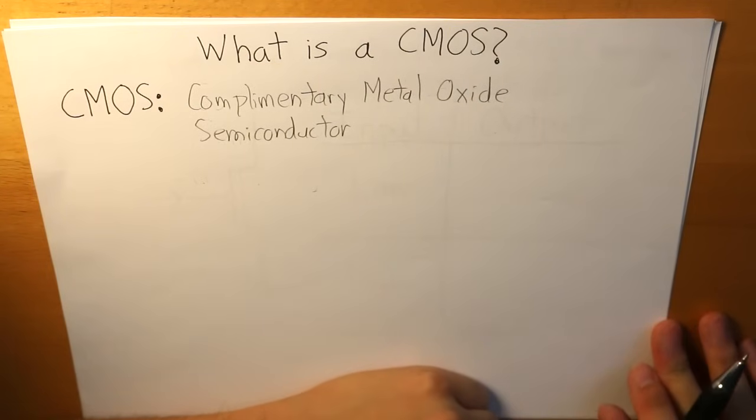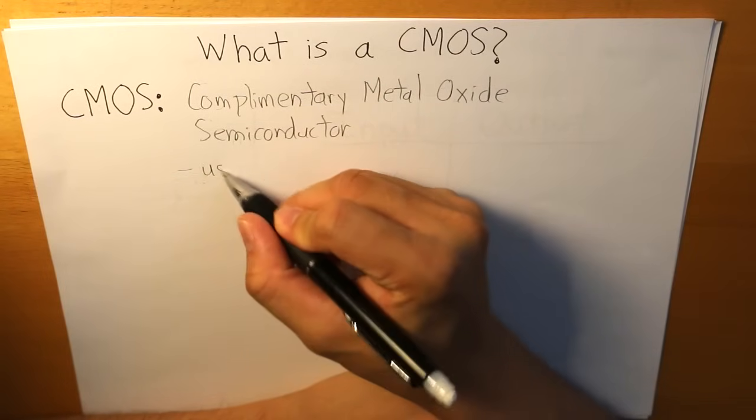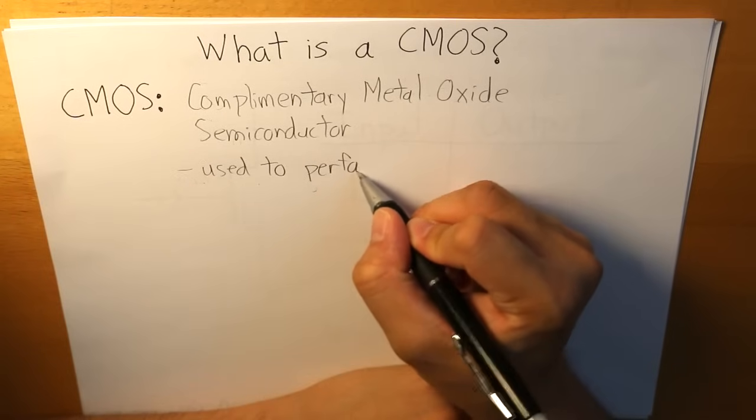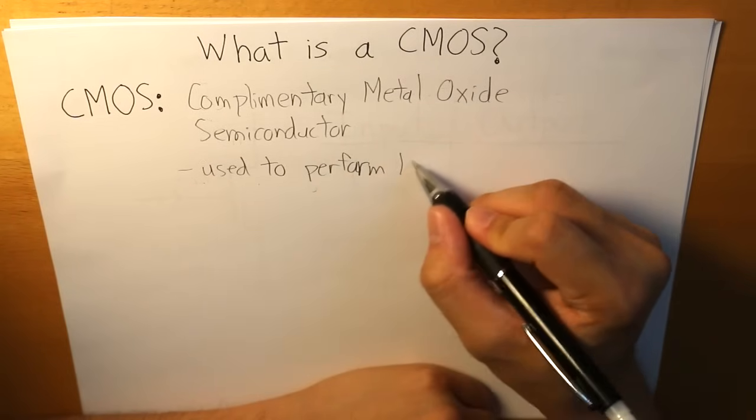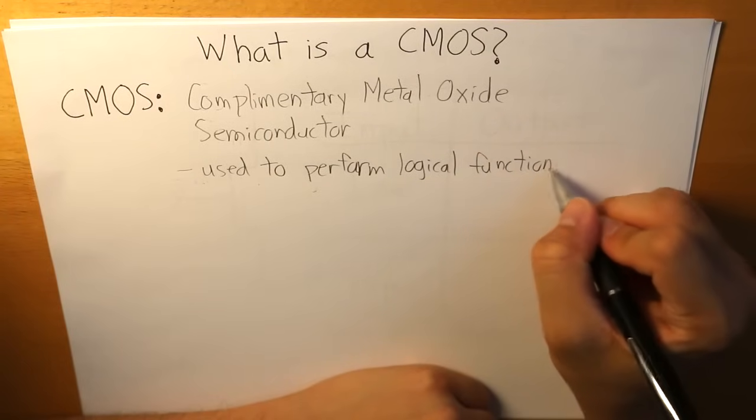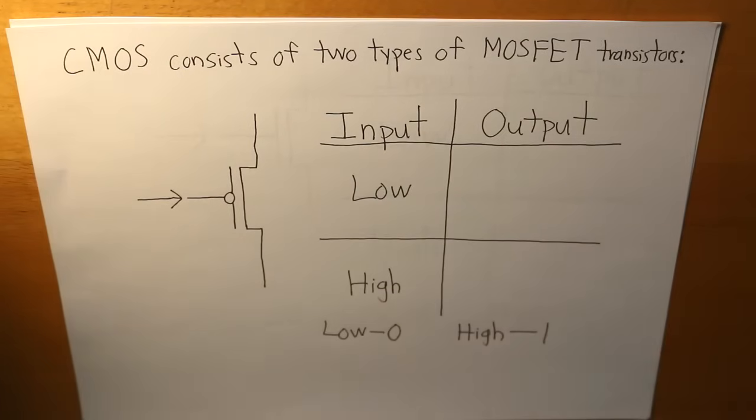It's like a logical transistor that is used to perform logical functions. The CMOS is essentially divided into two main parts, and these two main parts are simply two types of MOSFET transistors.